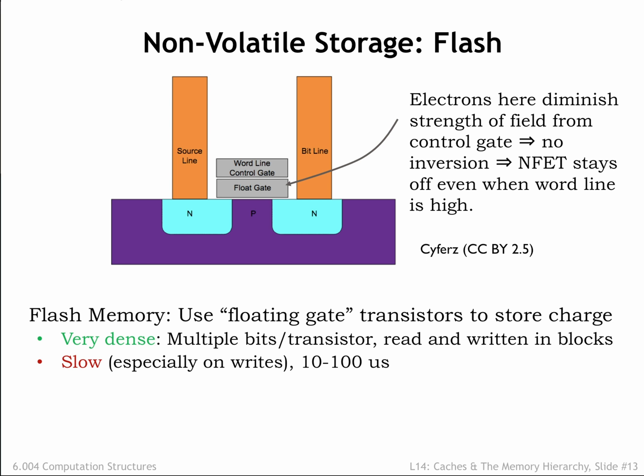Read access times for NOR flash memories are similar to that of DRAMs. Read times for NAND flash memories are much longer, on the order of 10 microseconds. Write times for all types of flash memories are quite long, since high voltages have to be used to force electrons to cross the insulating barrier surrounding the floating gate.